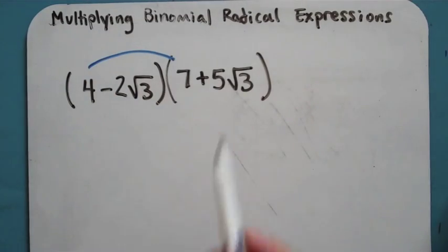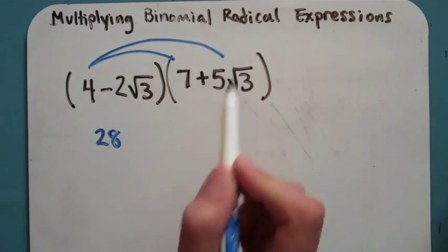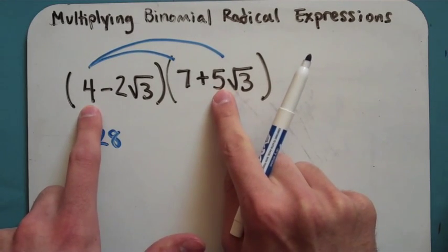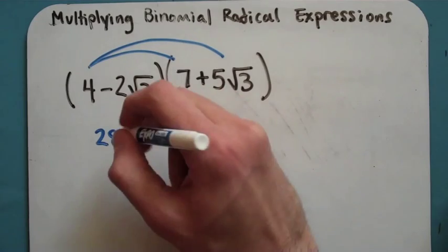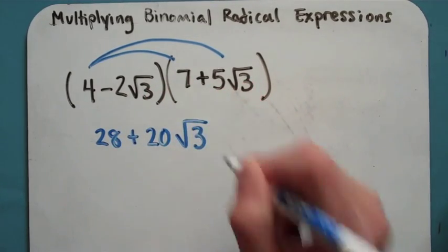So we're going to distribute our 4 to our 7, we're going to get 28. We're going to do 4 times 5 root 3. You multiply the numbers, you get 20 root 3. So you multiply the numbers, and if there were two numbers inside radicals, you would multiply both of those.